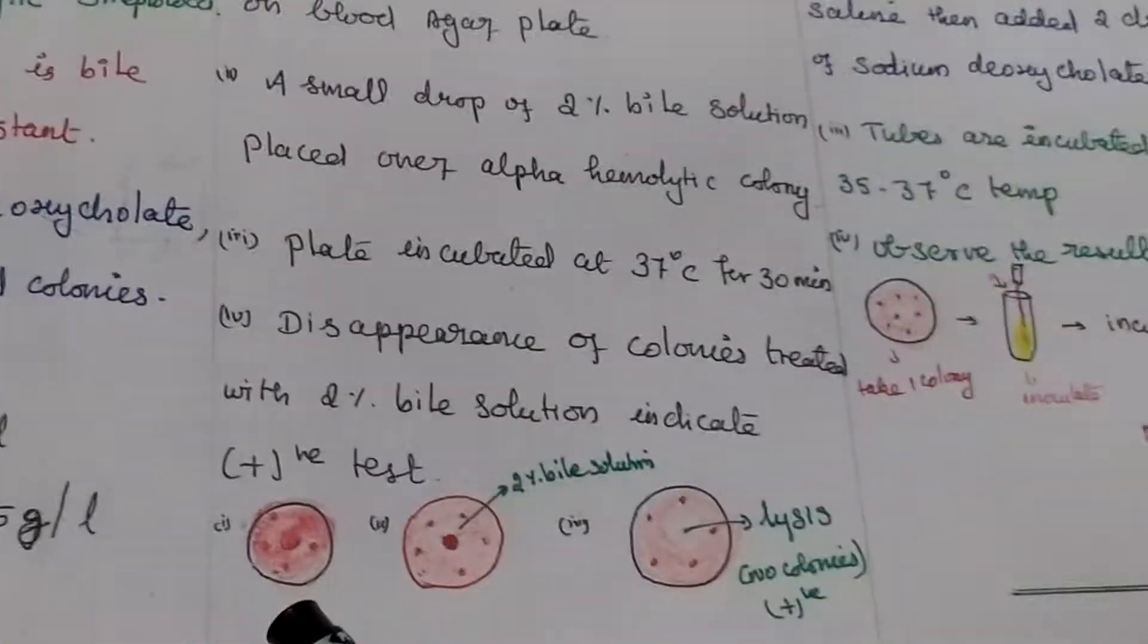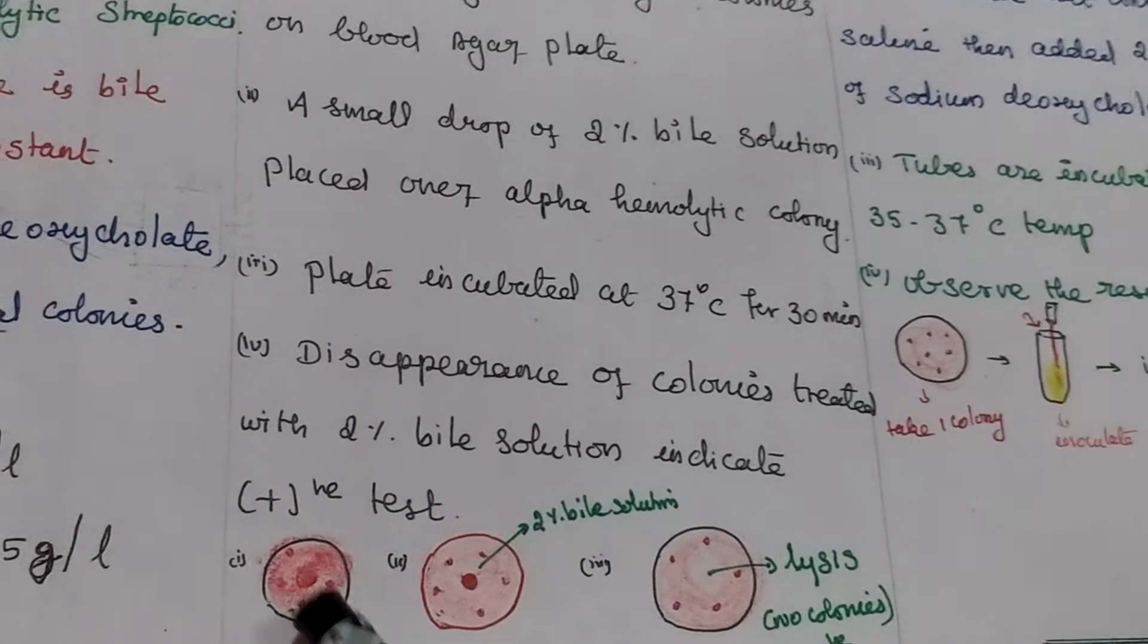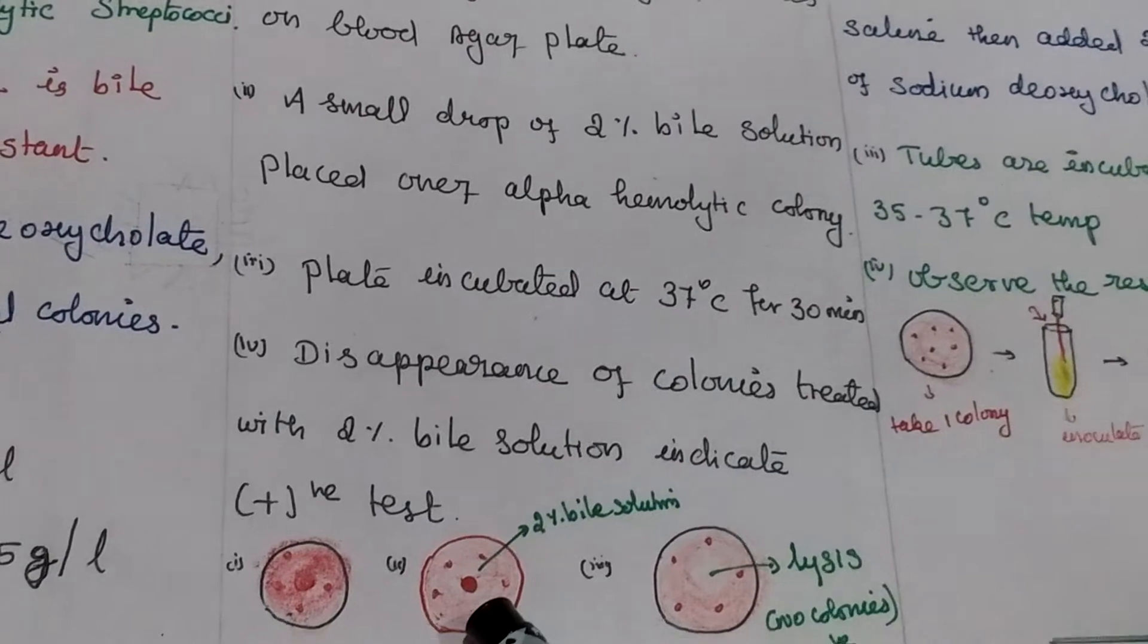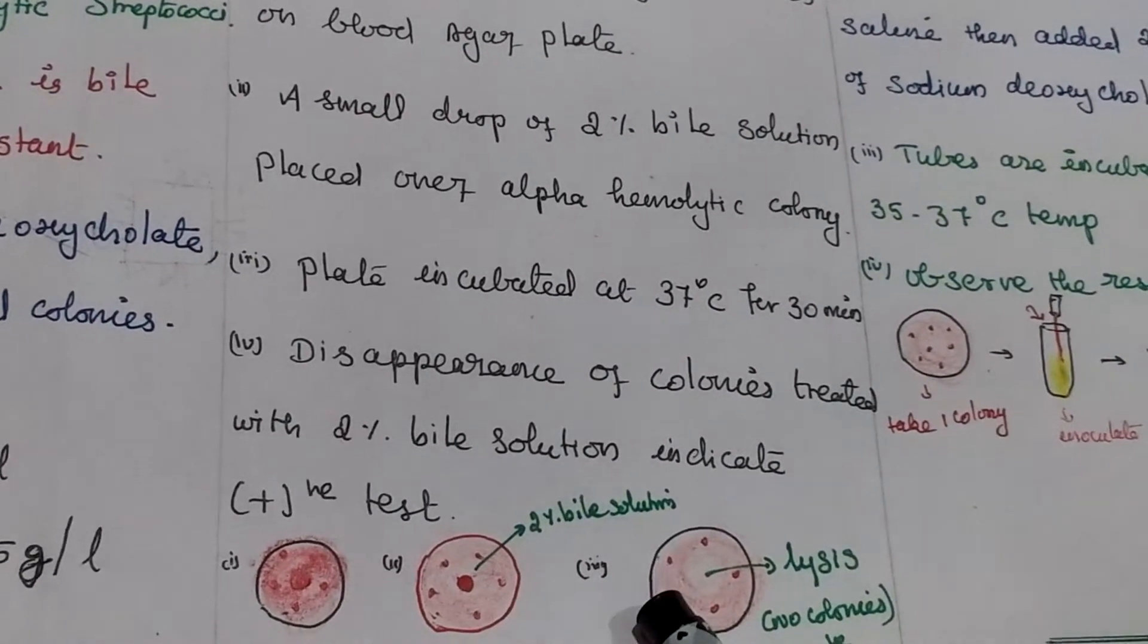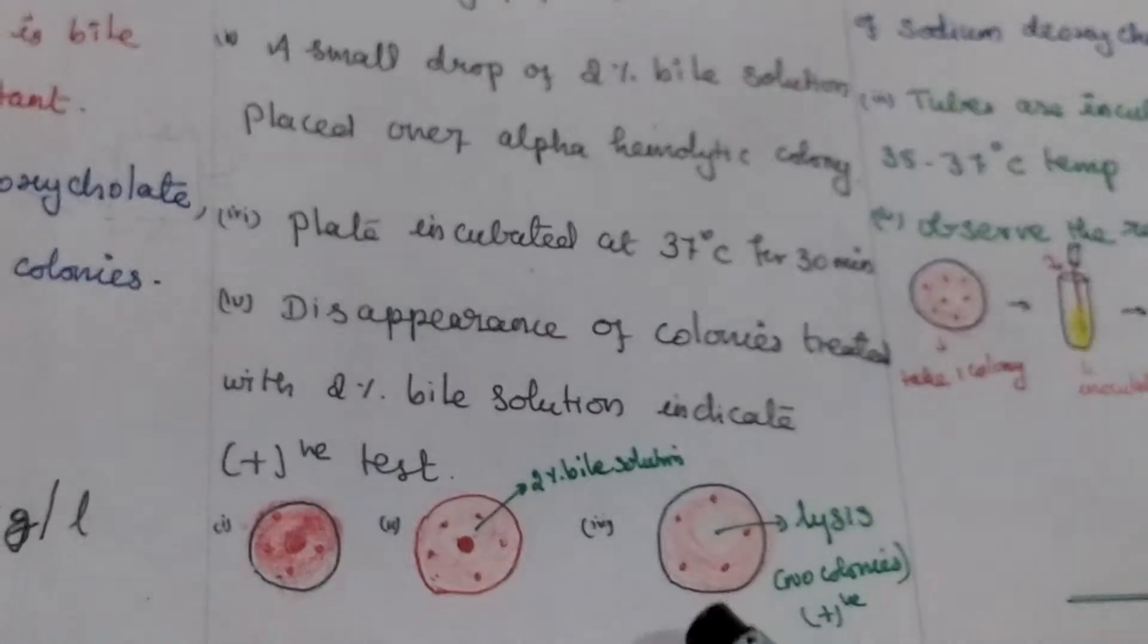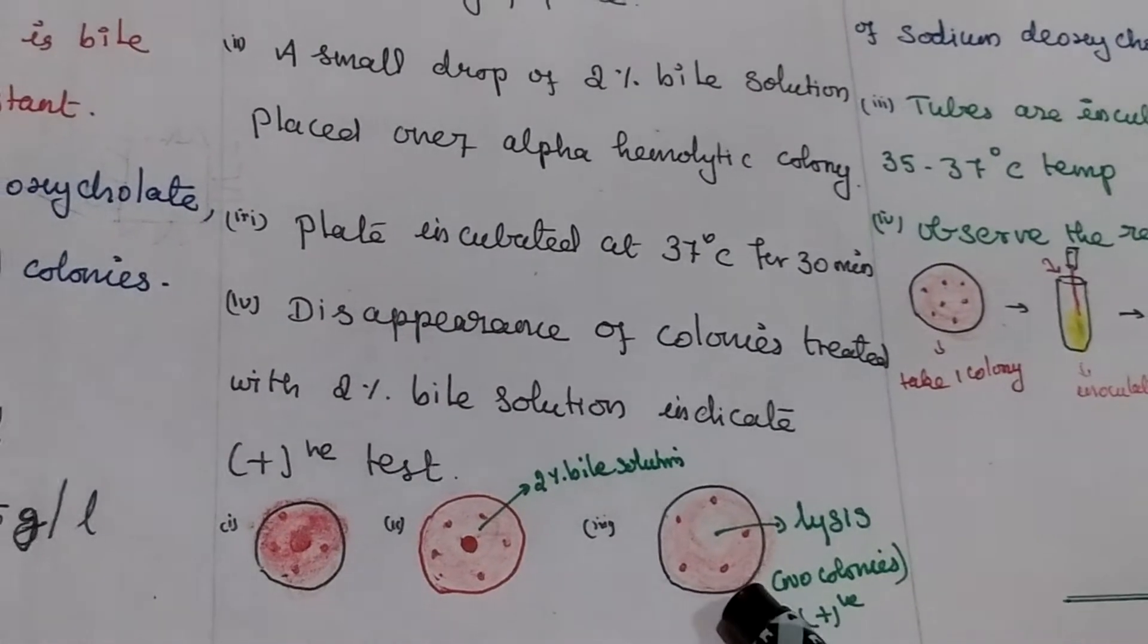This one is agar plate. It will produce the alpha hemolytic colonies. Here we are adding 2% bile solution. After that we will incubate the plate at 37 degrees Celsius. Lysis will occur. No colonies indicates a positive result.